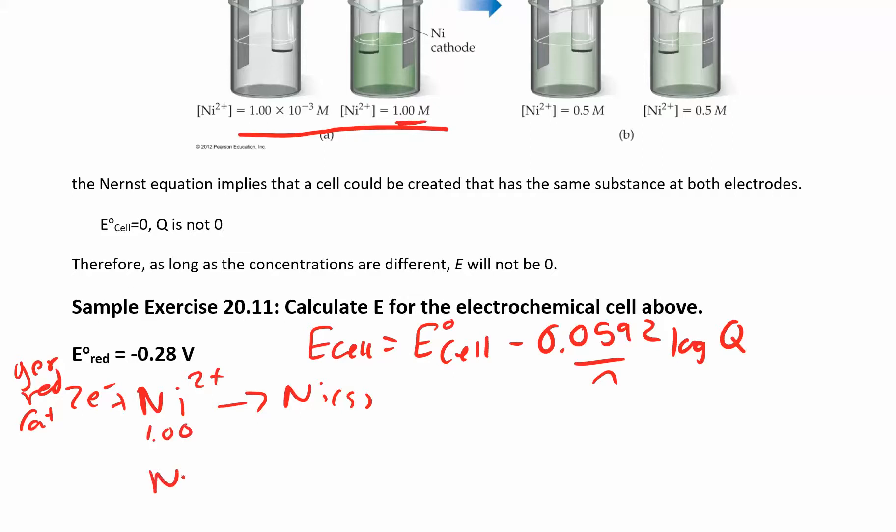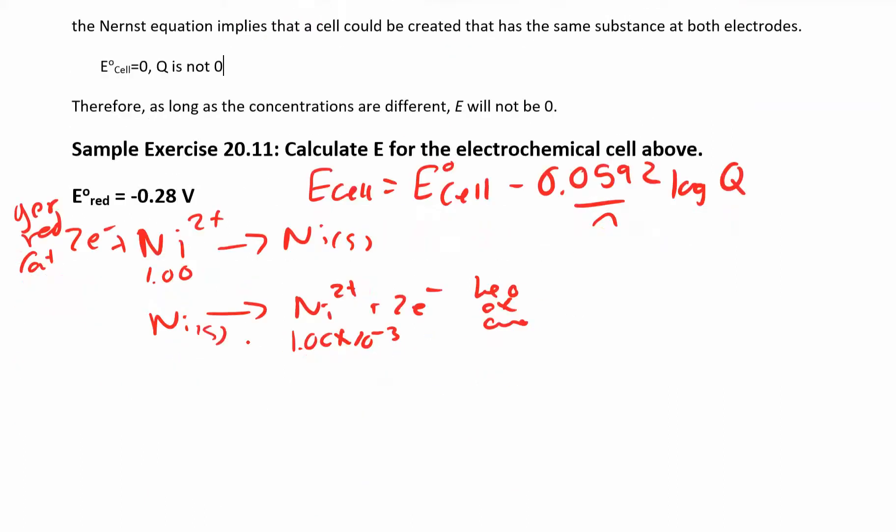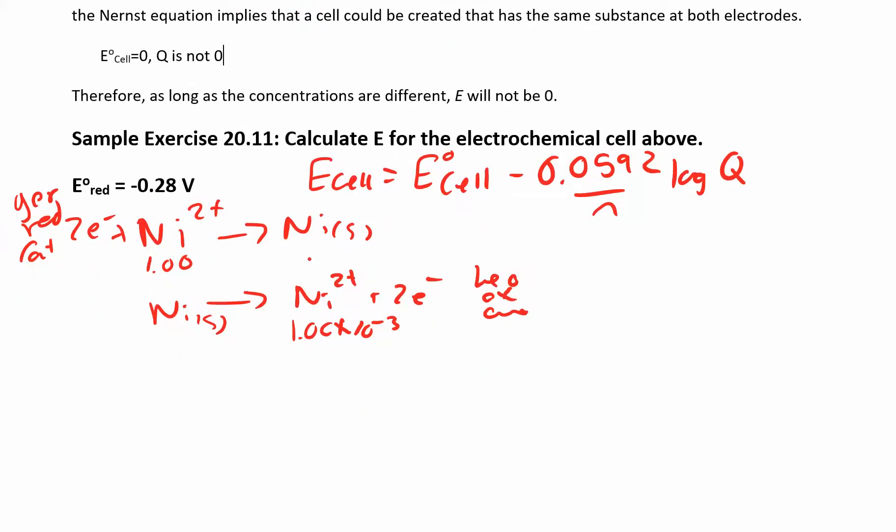And then if you had the other side, if you look at the other side, two electrons over here, this is the oxidation. This is the anode half reaction. That's that concentration. It's 1 times 10 to the negative 3. So if you added these reactions up, you could see that the cathode and the anode.